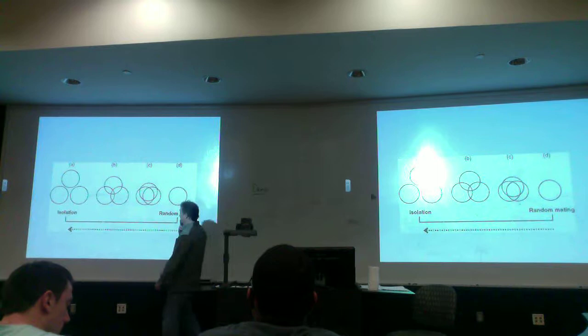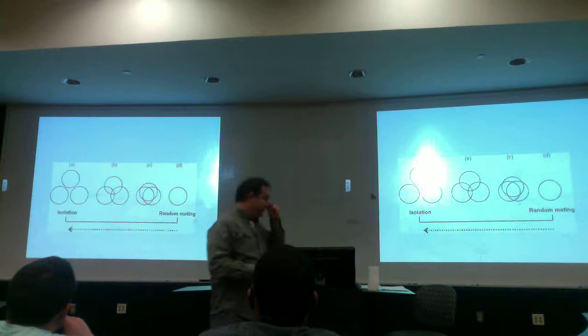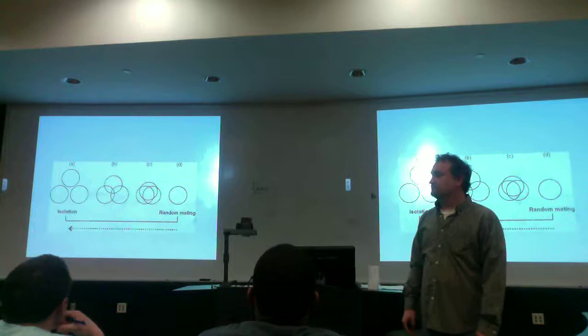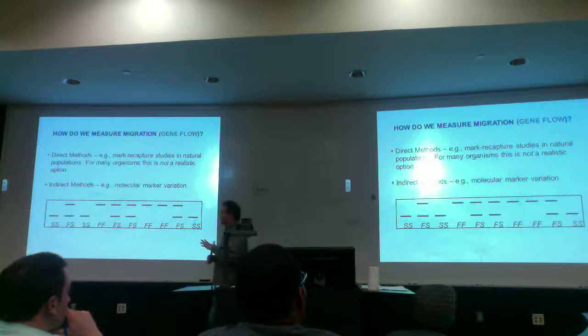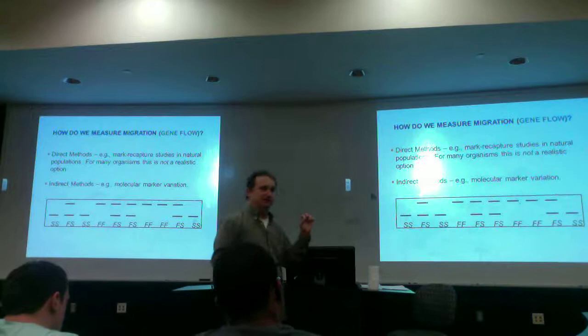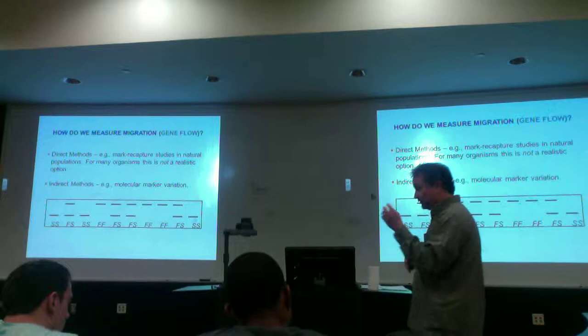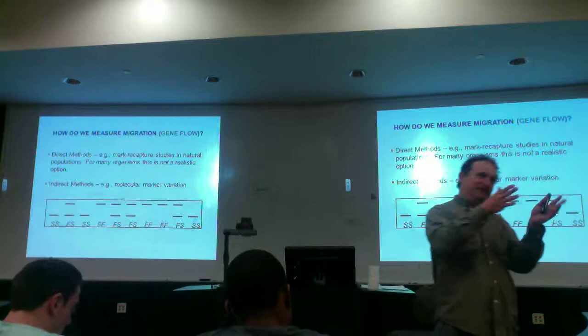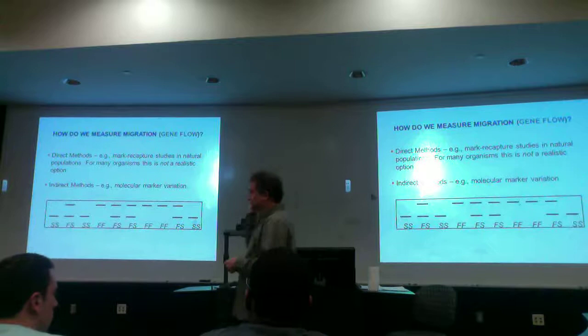Generally, what we're trying to do is decide: are we dealing with a single population, or do we have total isolation between groups? You would go out and sample a variety of different locations to determine whether they're linked or not linked. What we're really talking about is gene flow between populations, because gene flow is the key to linking them. Populations that are not linked are going to evolve independently, whereas populations that are linked are going to evolve as a single unit.